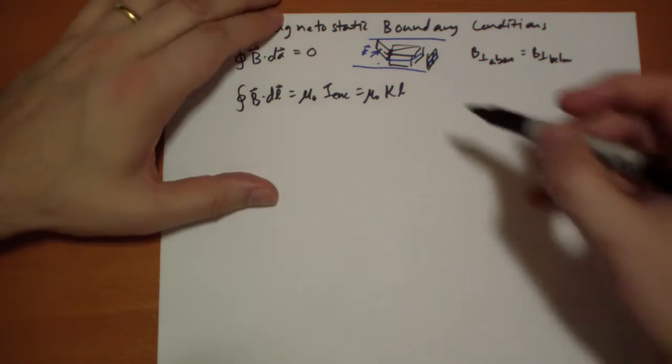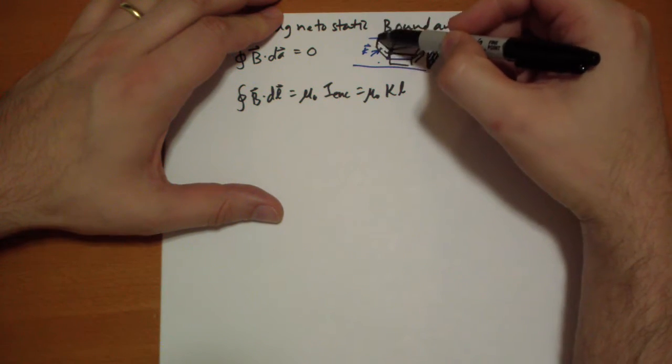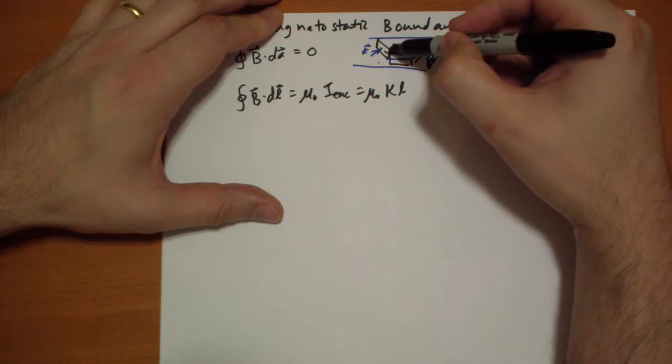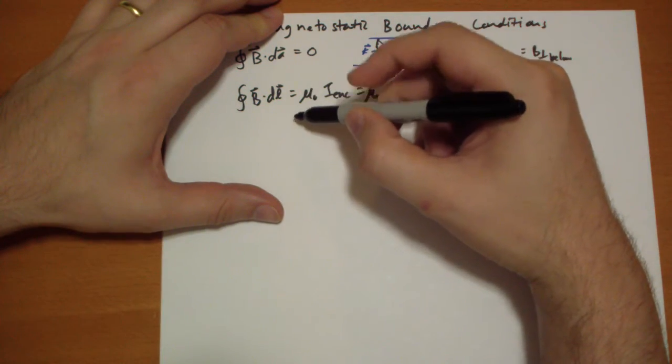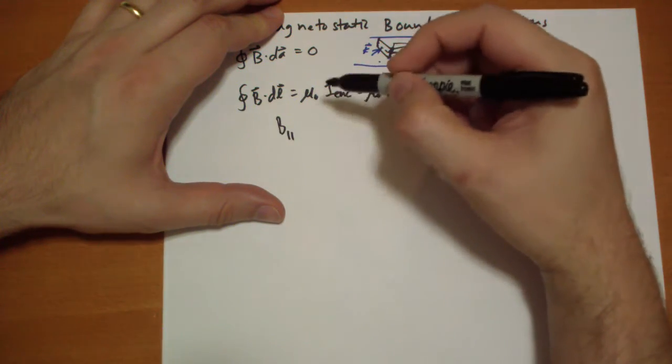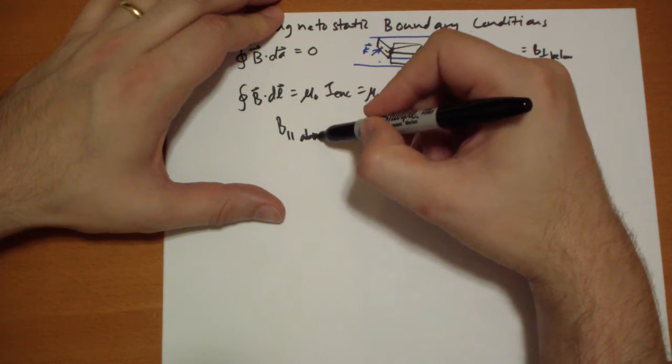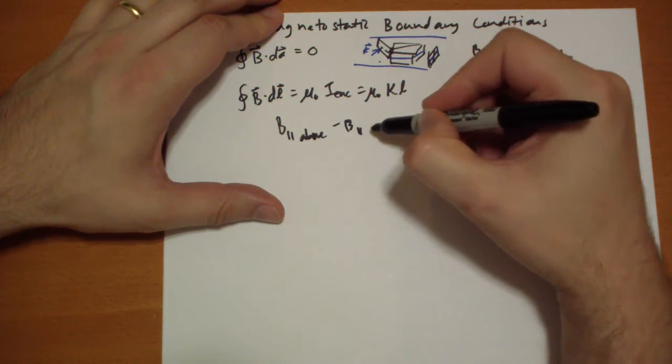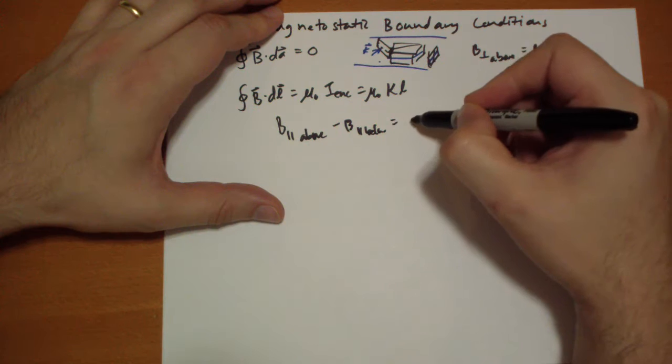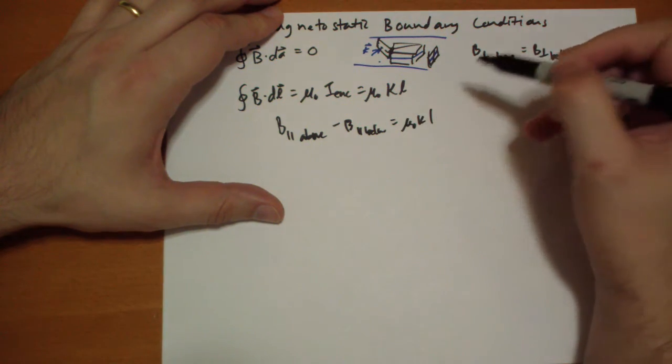And the vertical components won't change as we go up or down. This side is going to be the same as that side, so they're going to equal. So the only difference is going back and forth. And so we get the parallel component above minus the parallel component below is equal to this mu-naught K L.